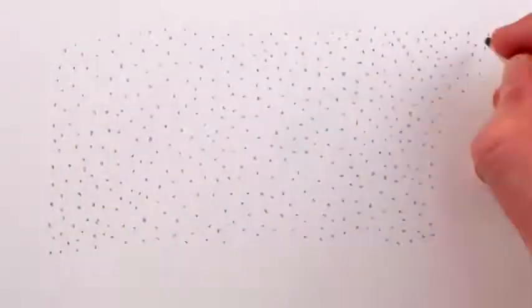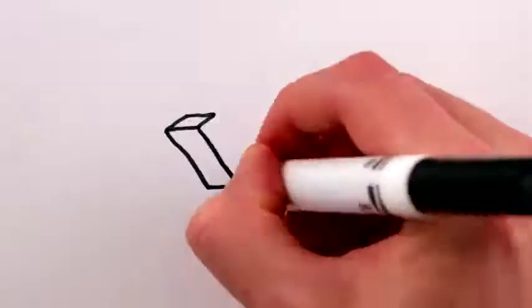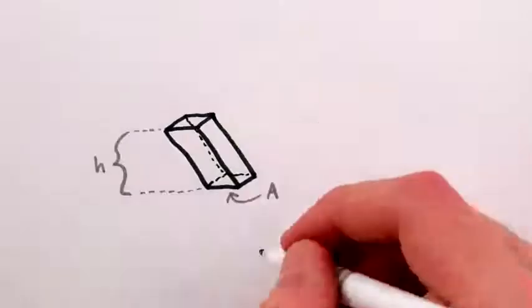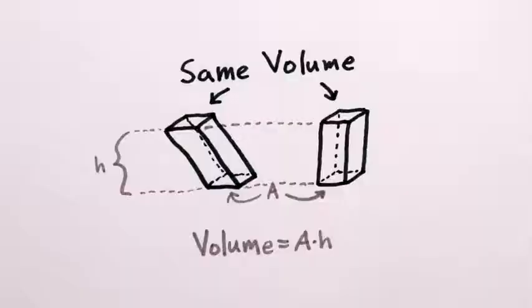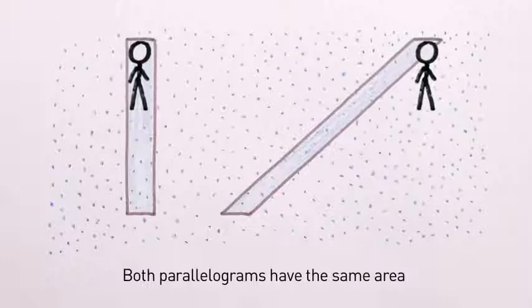To see this, you can picture that the raindrops themselves are stationary and you, and the earth beneath you, are moving upwards through the rain. And since the volume of a parallelepiped, that's a 3D parallelogram, doesn't depend at all on its slant, then no matter how fast you're moving horizontally, the same amount of rain will land on top of you each second.